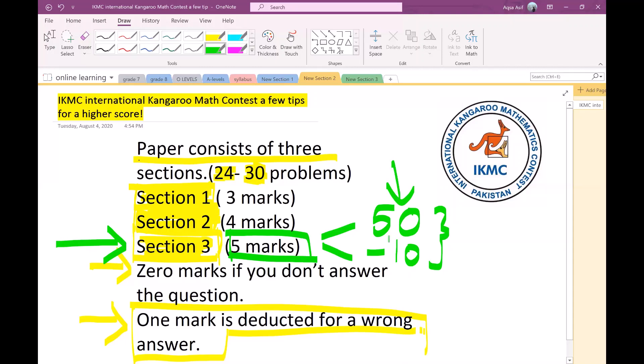So you have to decide. This is the section where you can score highest. So I would recommend go for it, attempt all the questions in Section 3. At least you will be losing maximum of 10 marks, but if your answers are correct you will be gaining 50 marks. So first of all, this is something that I wanted to share with all of you.